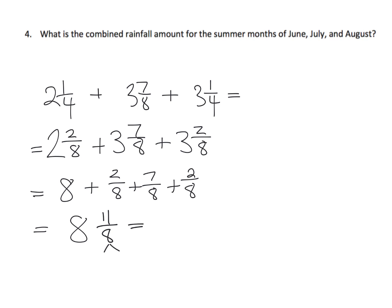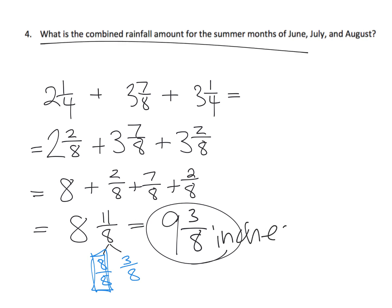And we know that eleven-eighths is a fraction greater than one. So that fraction greater than one is eight-eighths plus three-eighths. So this is equal to one more. So what is our result? This ends up being we have nine whole numbers because we had eight here plus one more. So now we have nine whole numbers plus that extra three-eighths. So the answer is nine and three-eighths, and what is it? It's nine and three-eighths inches is the combined rainfall for those summer months.